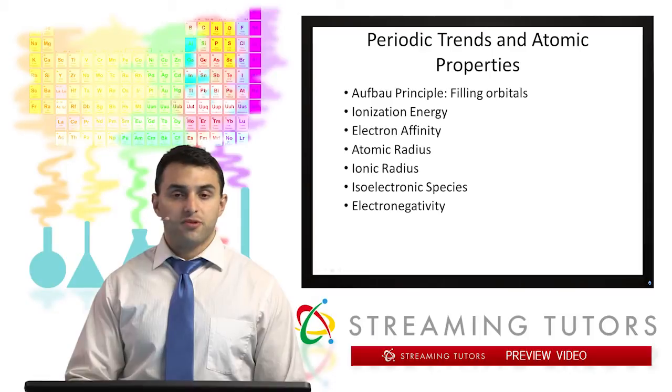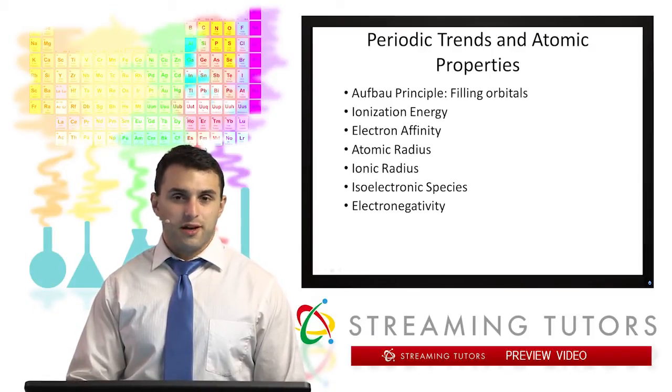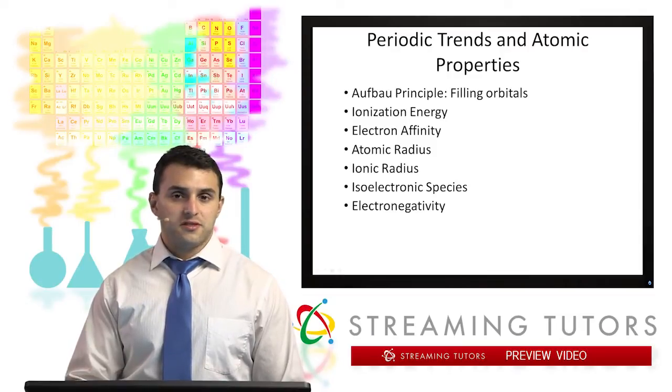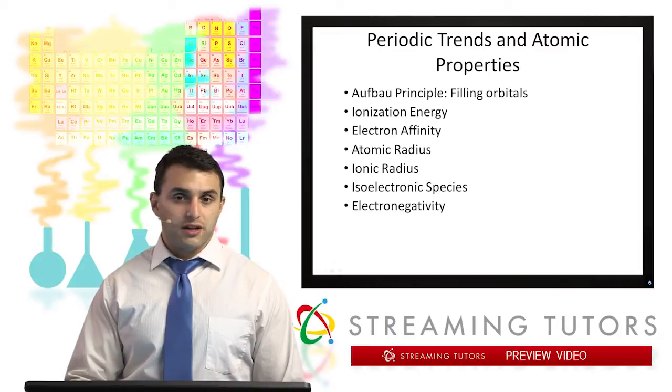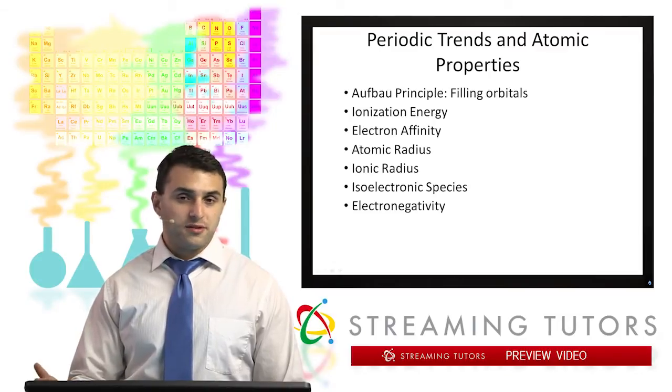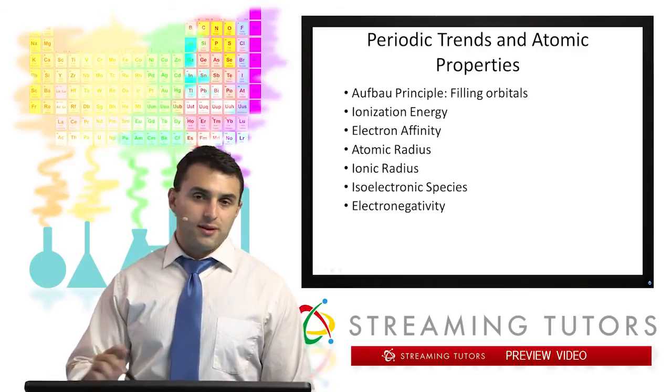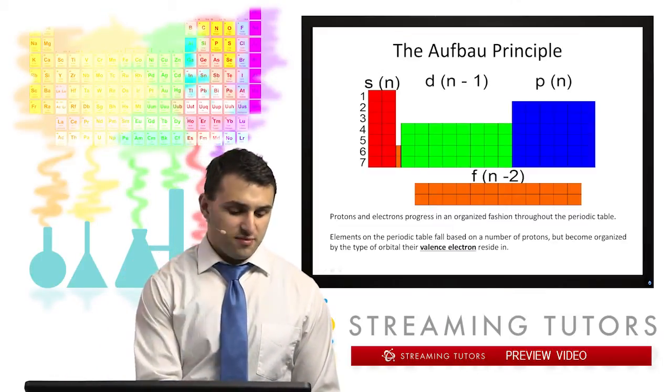There's a number of properties of the different elements and the periodic table is organized in such a way that allows us to pretty easily quantify the relationships between one side of the table and the other side of the table, between metals and non-metals, so on and so forth. We're going to start though by looking at what's called the Aufbau Principle.